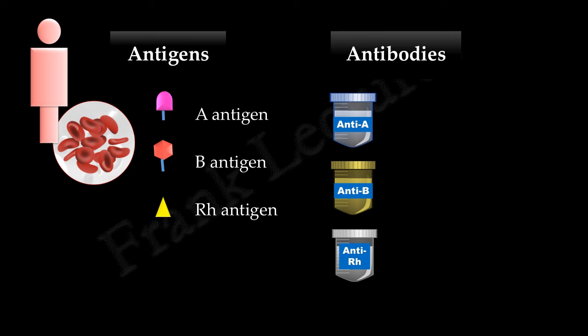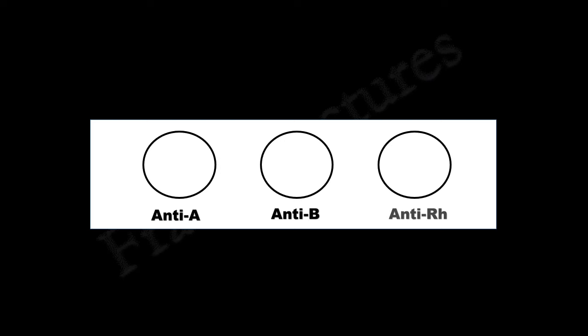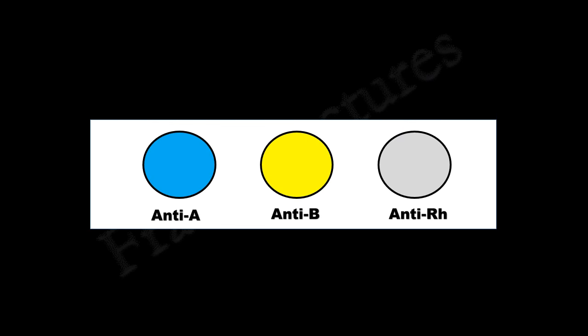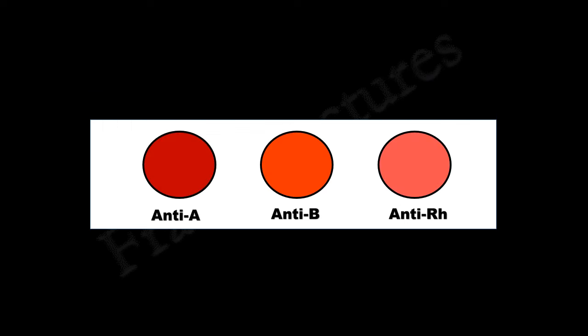Here we have three reagents labeled anti-A, anti-B, and anti-RH. Reagents labeled anti-A contain antibodies against A antigens. Similarly, anti-B reagents contain antibodies against B antigens. Reagents labeled anti-RH contain antibodies against RH antigen. We will take a clean glass slide and mark three circles, labeling them as anti-A, anti-B, and anti-RH. We will put a drop of each reagent in the respective labeled circle, then add one to two drops of blood in each circle and mix the reagent with the blood.